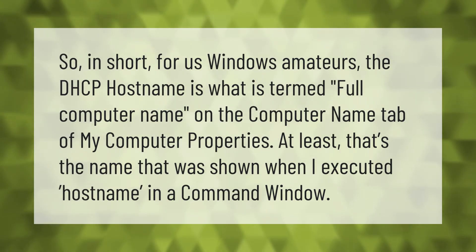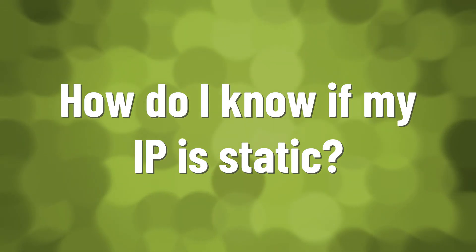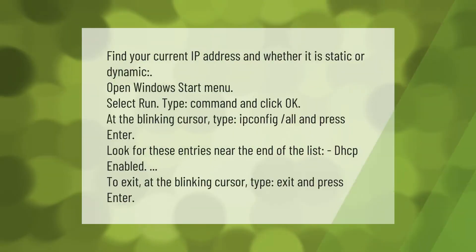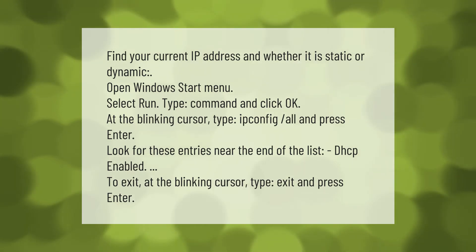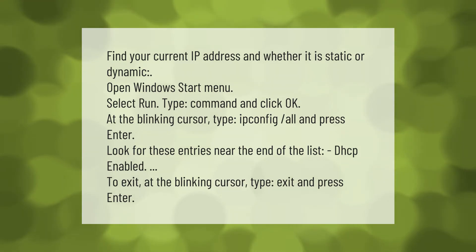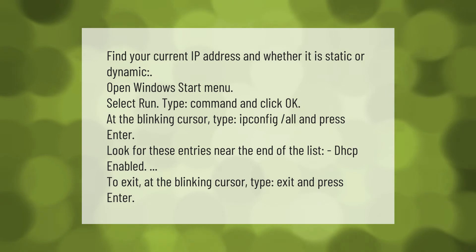To find your current IP address and whether it is static or dynamic, open the Windows Start menu, select Run, type 'command' and click OK. At the blinking cursor, type 'ipconfig /all' and press Enter. Look for the DHCP Enabled entry near the end of the list. To exit, type 'exit' and press Enter.